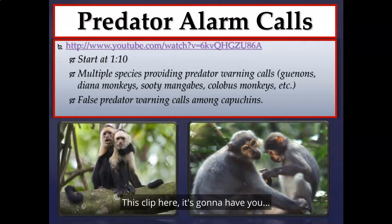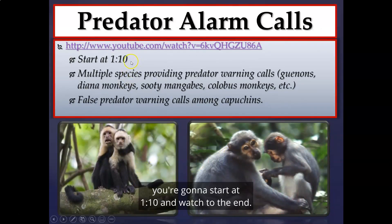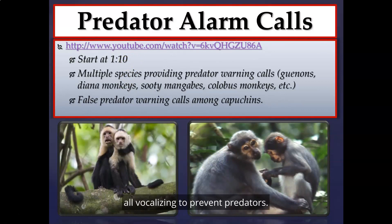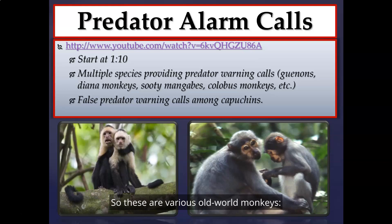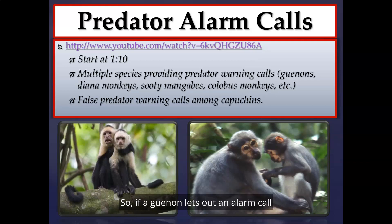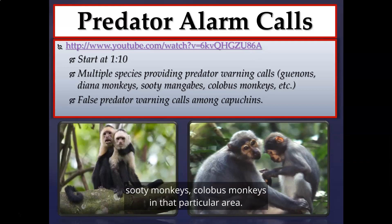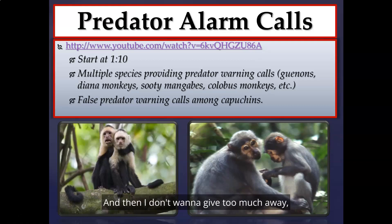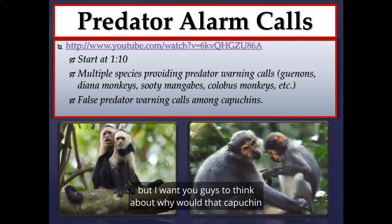In the module this week there is a clip starting at 1:10 that shows multiple species — Gwinnons, Diana monkeys, Suti mangabeys, and Colobus monkeys — all vocalizing predator warning calls. Remarkably, they can communicate between species, so one species' alarm call also benefits the others nearby. There is also an example of a false predator alarm call among a capuchin — consider why that capuchin would let out a false alarm call.